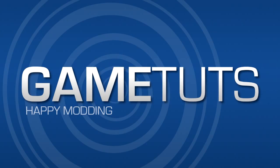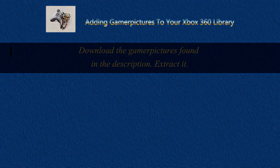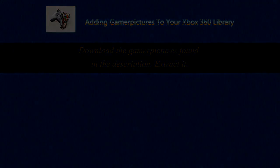What's up guys, it's James back again with another tutorial video for how to get more gamer features in your Xbox 360 library. To do this, you want to jump into the first step of downloading it, which will be in the description, and the first step is to extract it.